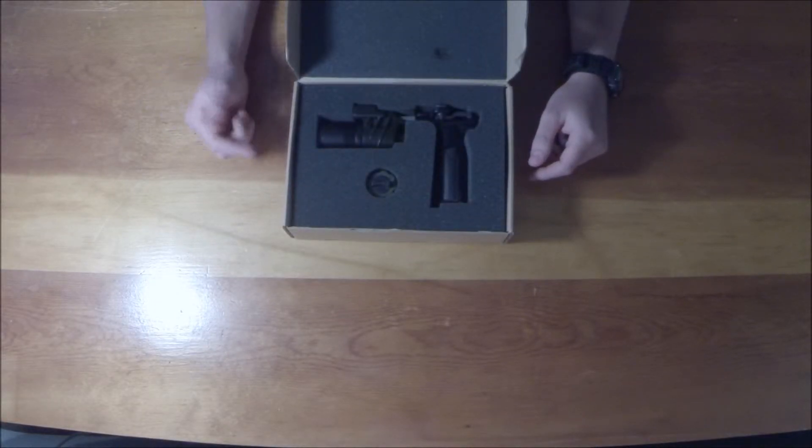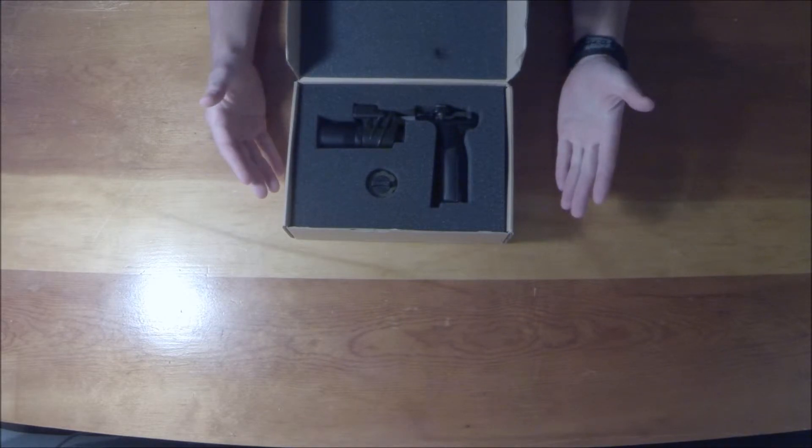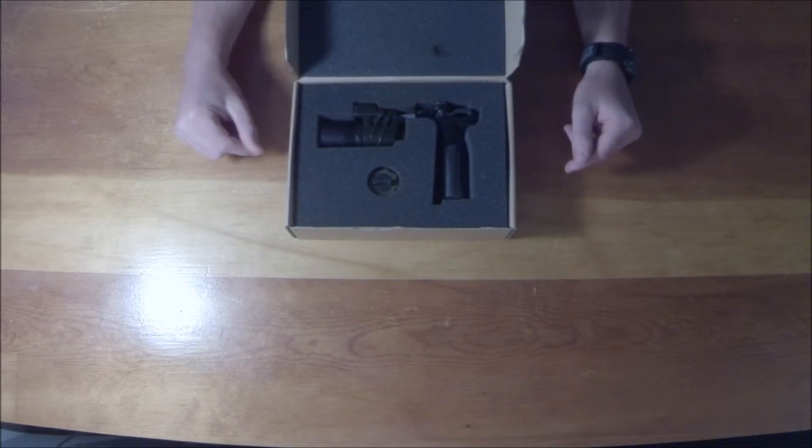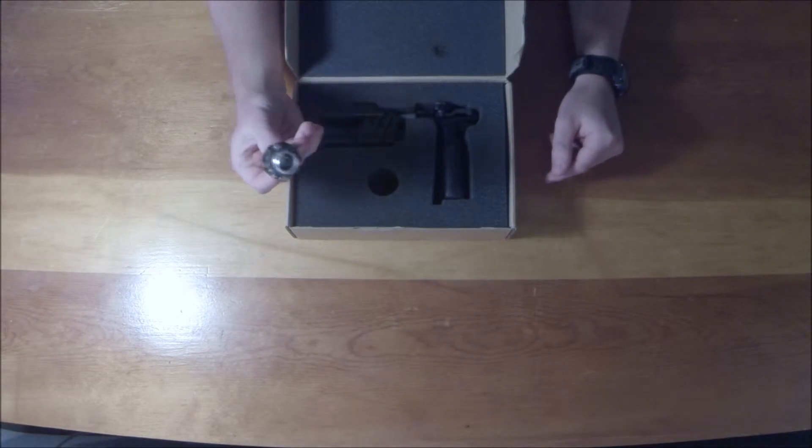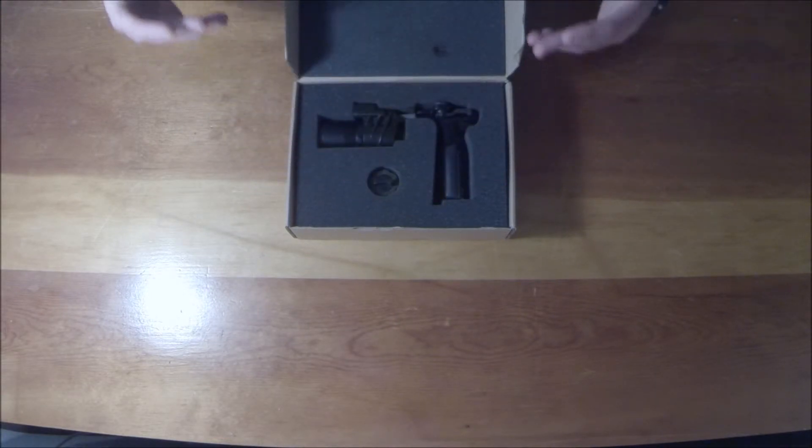Pulling off the top foam cover will reveal your replica M900 foregrip. As you notice in the box, it comes in two separate pieces. This small piece here being the bottom of your foregrip and obviously the foregrip itself.